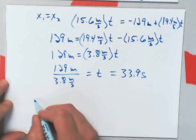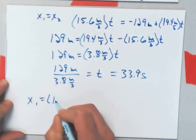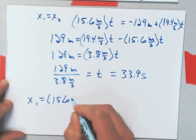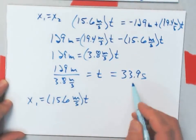Well, the first car's equation of motion is x1 equals 15.6 meters per second times t. That's the t.